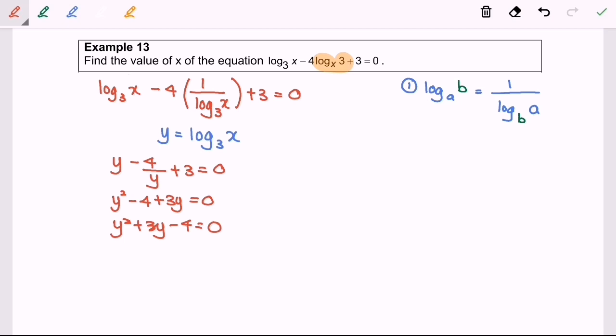Next I'm going to factorize the equation where we will have y plus 4 bracket y minus 1 equals 0. So we will have y equals negative 4, y equals 1.